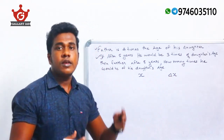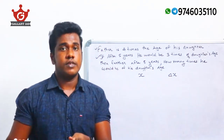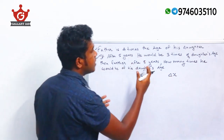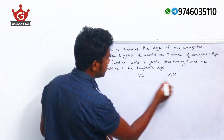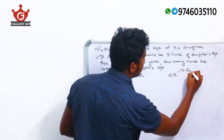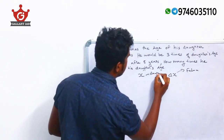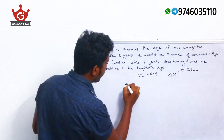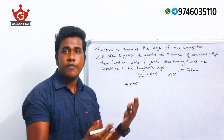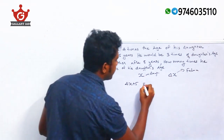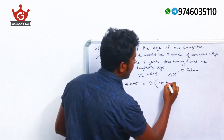After five years, the father's age is equal to three times the age of the daughter. So after five years the father's age is 4X + 5, which equals three times the daughter's age after five years.